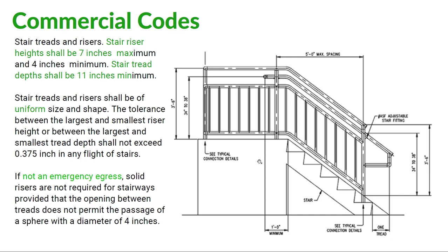The tolerance between the largest and smallest riser height, or between the largest and smallest tread depth, shall not exceed 0.375 inch in any flight of stairs. If the stairs are not an emergency egress, solid risers are not required, provided that the opening between the treads does not permit passage of a sphere with a diameter of 4 inches. So open risers are permitted in a public or commercial space as long as it's not an emergency egress path and they're less than 4 inches of space.